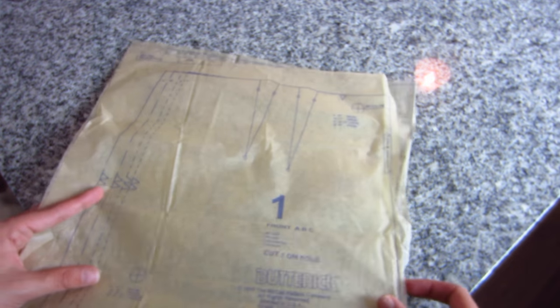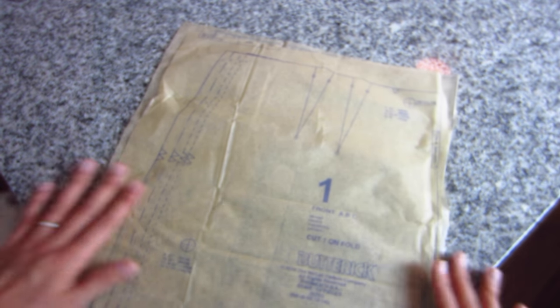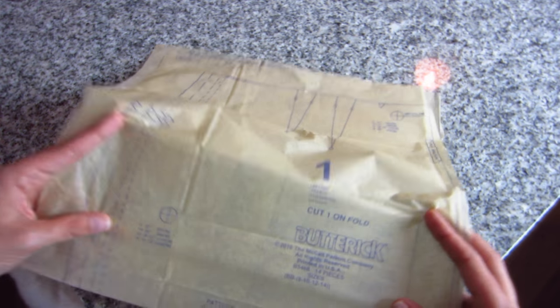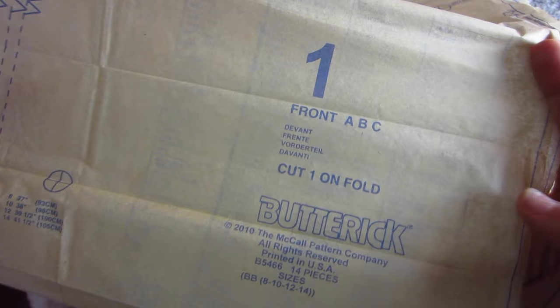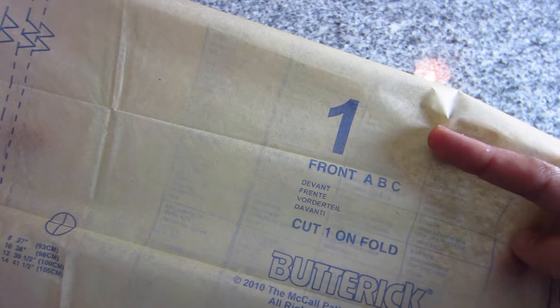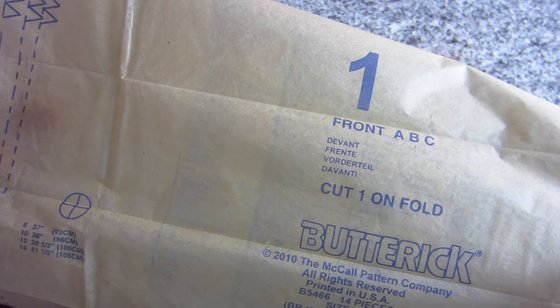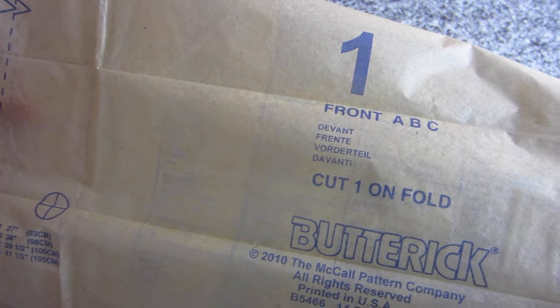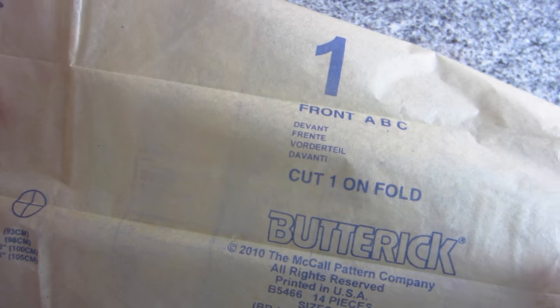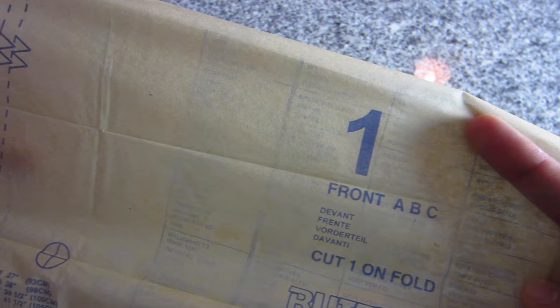Some information that you can find right smack dab in the middle of the whole pattern piece is the pattern piece number. Remember last week we notated which pattern pieces we were going to need to cut out based on our version of the pattern that we would be making. So this is how you know what that is.